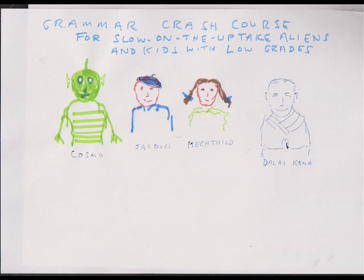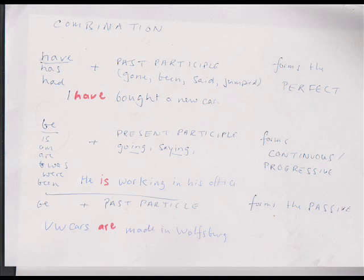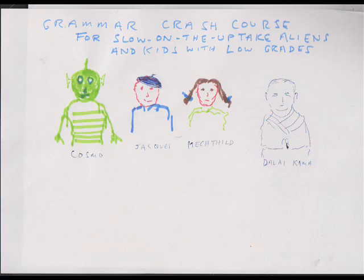Mechthild: 'Wir werden dort seit zwei Stunden gewartet haben.' Thank you very much. 'The work would have been done' — 'would' is conditional; 'have been' is perfect; but after a form of 'be' we have the past participle, therefore a passive form. We have, therefore, conditional perfect in the passive. Mechthild: 'Die Arbeit wäre geleistet worden.' Thank you very much.